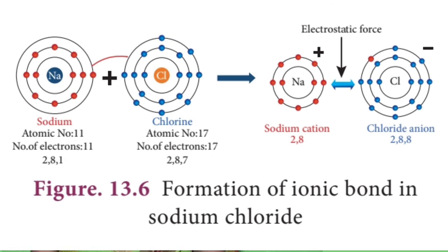Sodium is unstable, so it combines. Chlorine has atomic number 17, so electron distribution is 2, 8, 7. The outermost valence shell has 7 electrons. Sodium loses one electron; that valence electron of sodium is gained by chlorine. So a bond is formed between sodium and chlorine.